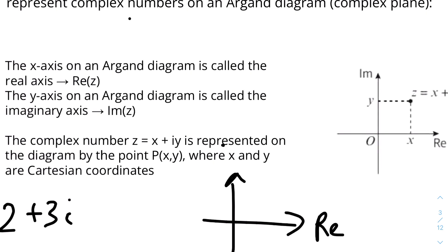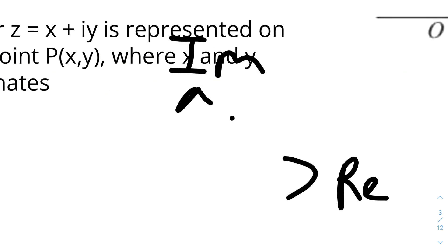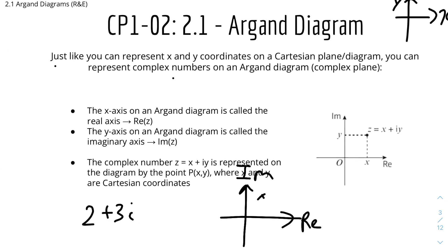If we were to plot it on an Argand Diagram with the real and imaginary axis, the point 2 plus 3i will be roughly around here, where this is basically 2 and this is 3. So this will be 2 plus 3i.